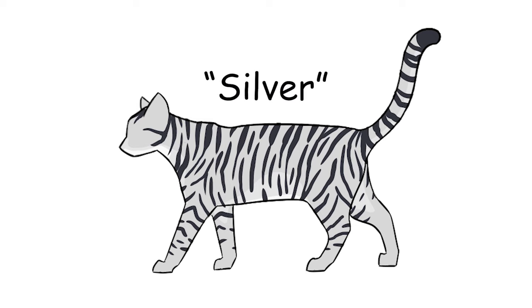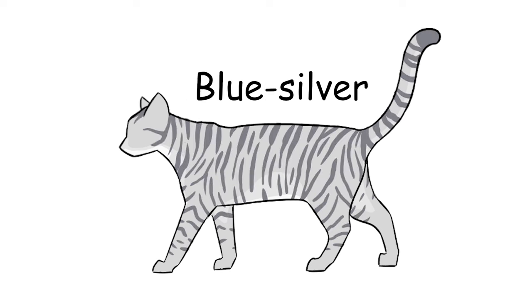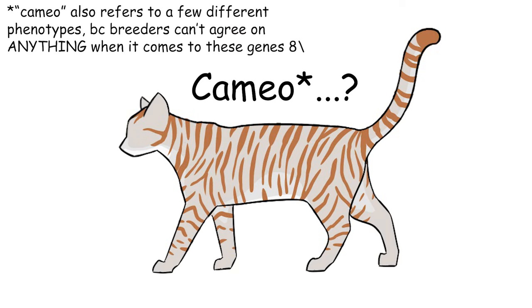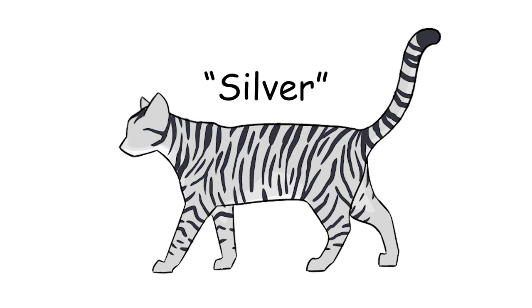The phenotype is called silver, so a black silver tabby, a blue-silver tabby, etc. But for some reason, gingers are called cameos. And if someone ever just says silver tabby, they probably mean a black silver.